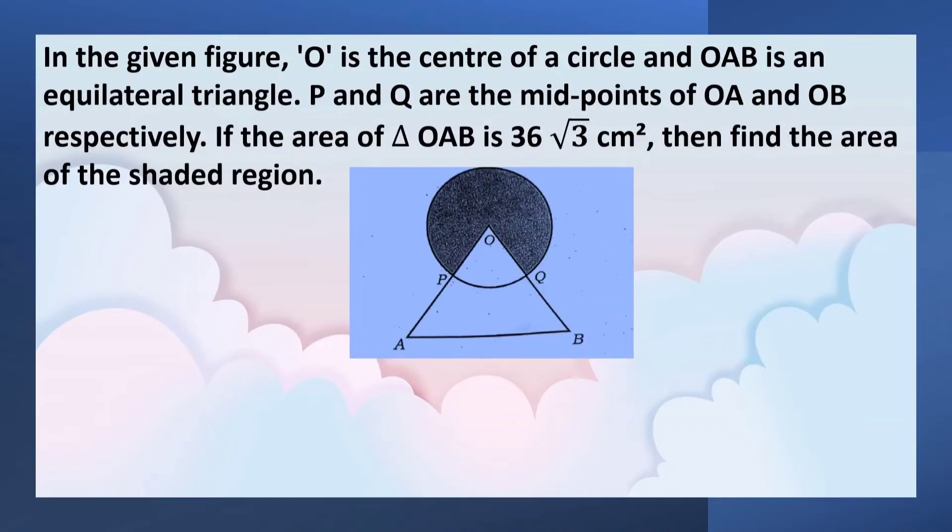In the figure, O is the center of the circle, OAB is an equilateral triangle.